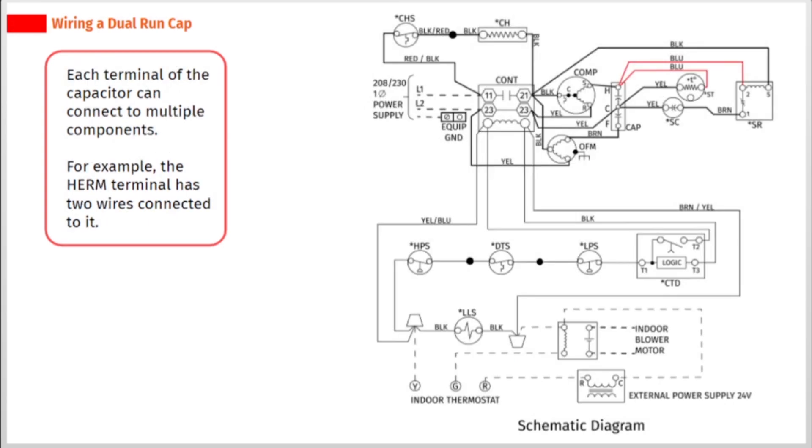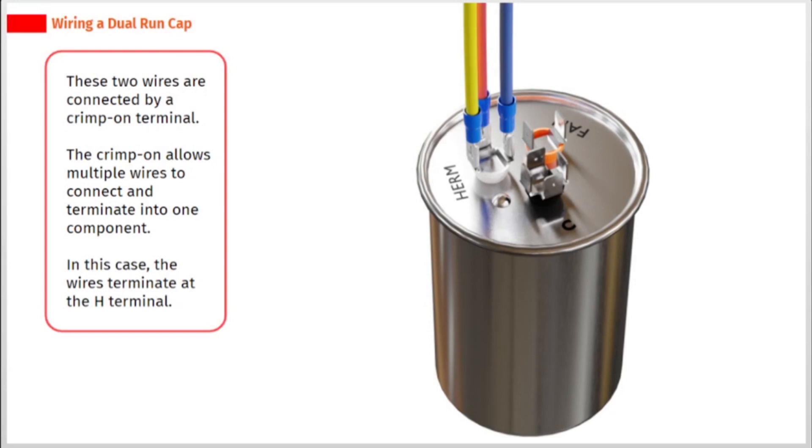Each terminal of the capacitor can connect to multiple components. For example, the home terminal has two wires connected to it. These two wires are connected by a crimp-on terminal. The crimp-on allows multiple wires to connect and terminate into one component. In this case, the wires terminate at the H terminal.